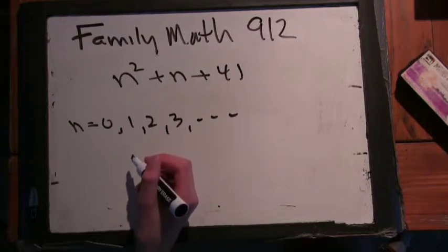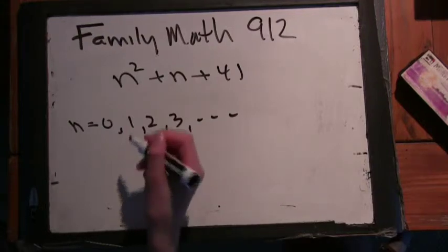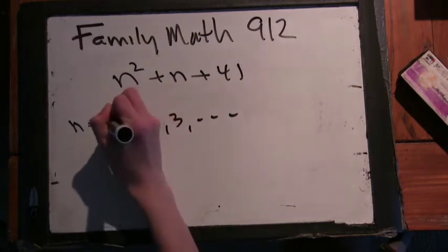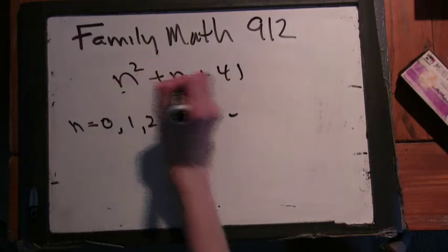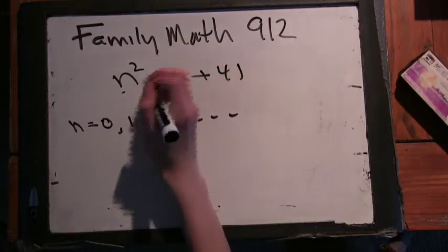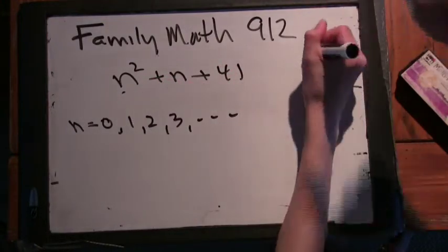Now, this seems to produce a lot of prime numbers. So plug in n equals 0, what do you get? n equals 0, so you get 0, 0, 41, you get 41. Okay. Let's write that there, 0 dash 41.